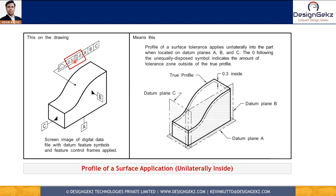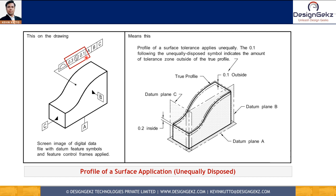In the second example, the outside tolerance value is 0, meaning the total 0.3 tolerance zone is entirely inside the true profile. This is used in cases where the surface has a very close interface with a mating part and we can't allow surface variation outside the true profile. Both the first and second cases are unilateral distributions. In the third case, outside tolerance is 0.1, so inside tolerance is 0.3 minus 0.1, which is 0.2 — this is an unequal distribution of the tolerance zone around the true profile.